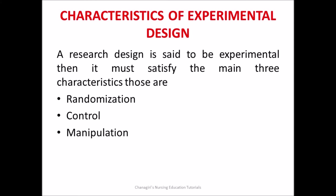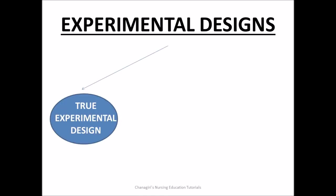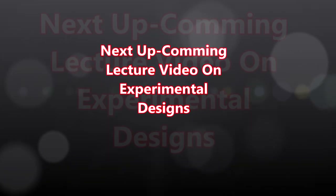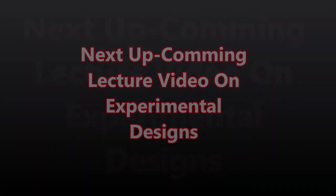Randomization means while choosing the samples for the study, a random selection method must be used, which eliminates sample selection bias. Control means the design must control the extraneous variables — the researcher must include experimental and control groups in the research study. Manipulation means the study must include an independent variable on which the research questions will be answered or hypothesis will be tested. Based on these three characteristics, experimental research designs are broadly classified into true experimental, quasi-experimental, and pre-experimental research designs. We will discuss in detail about these three designs in next upcoming videos — till then, take care and thank you for watching.